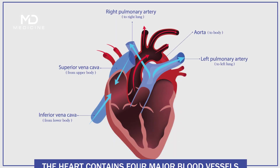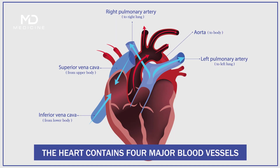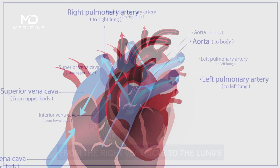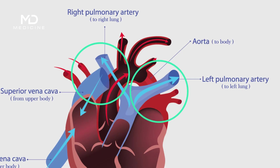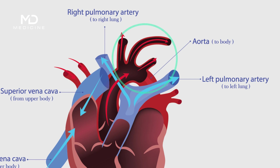The heart also contains four major blood vessels that supply the heart with deoxygenated and oxygenated blood. These are the pulmonary artery, the aorta, the superior vena cava, and the inferior vena cava. The pulmonary artery is responsible for transporting deoxygenated, oxygen-poor blood from the heart's right ventricle to the lungs.